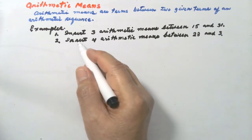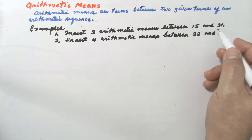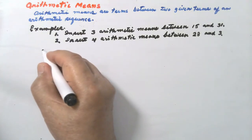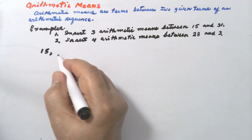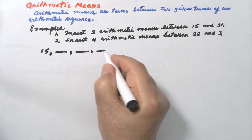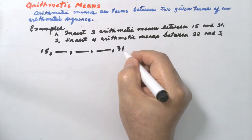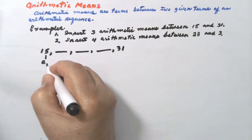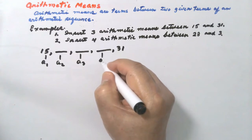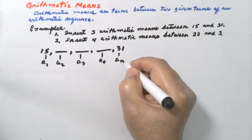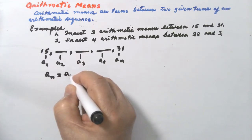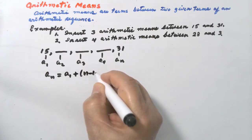Example 1: insert three arithmetic means between 15 and 31. Our two given terms are 15 and 31, so 15 is the first term. We are asked to insert three arithmetic means — one, two, three — and then 31. So this is a sub 1, then a sub 2, a sub 3, a sub 4, and then a sub n.